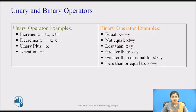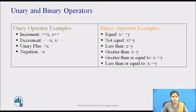Let's start the session with the types of operators. The types of operators are unary, binary, and ternary. A unary operator is one that takes a single operand and performs an operation. Examples of unary operators are pre-increment, post-increment, pre-decrement, post-decrement, unary plus, negation, etc.